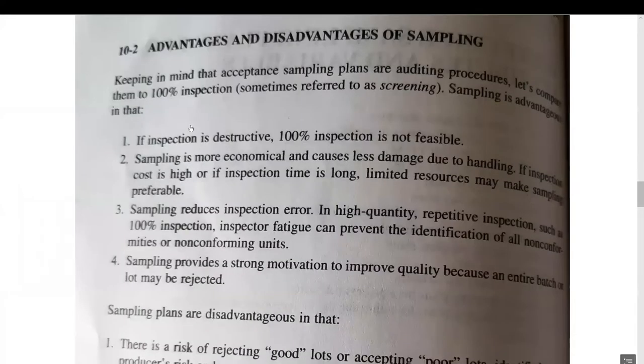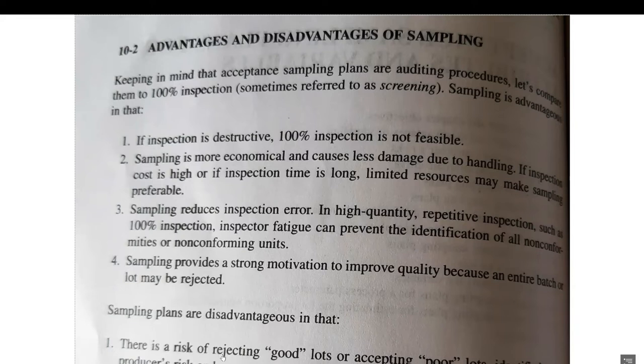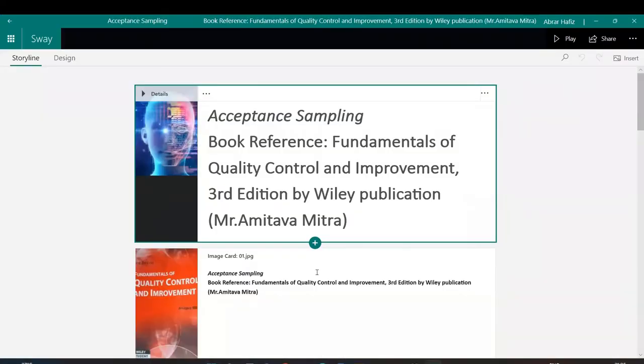Regarding sampling itself, this is articulated nicely. Keeping in mind that acceptance plans are auditing procedures, let's compare them to 100% inspection, sometimes called screening. Advantages: if inspection is destructive, 100% inspection is not technically feasible. Sampling is more economical and causes less damage due to handling. If inspection cost is high or time is long, limited resources may make sampling preferable. Sampling reduces inspection errors and provides strong motivation to improve quality. However, there's always beta risk—you may accept bad product or reject good product. This is called consumer risk and producer risk.